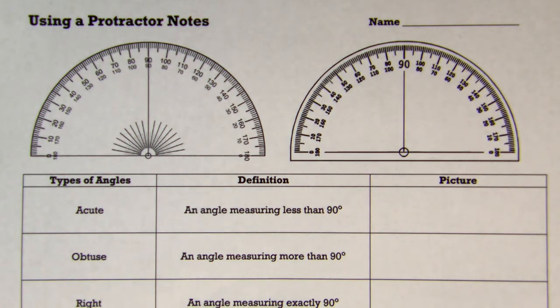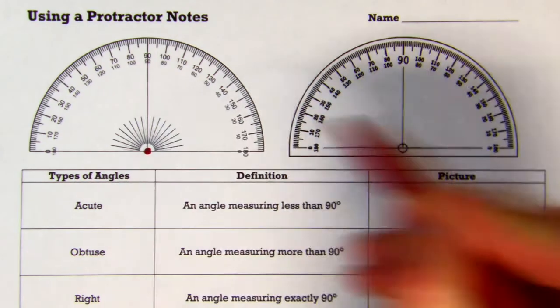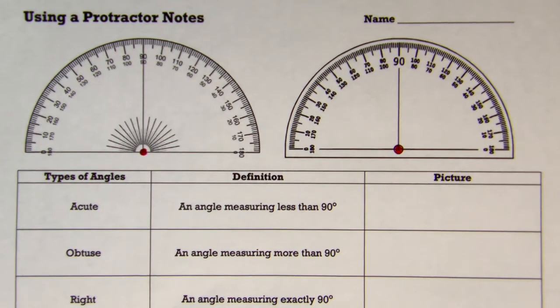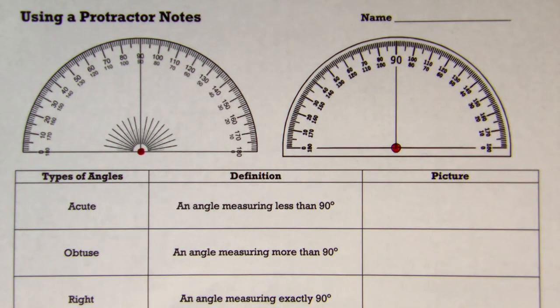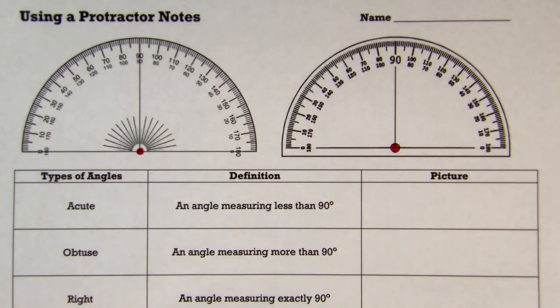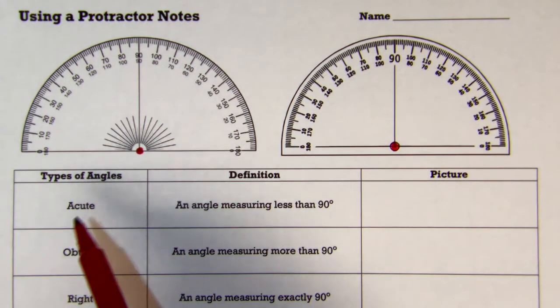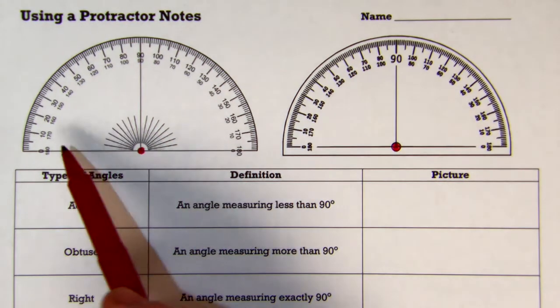Some key things about protractors you need to know is that here is your center point for both of them. That little center point there is where you want to make sure the vertex goes in the angle to measure. The other part you need to make sure you use correctly is our numbers. You'll notice both protractors have numbers, two sets of numbers.